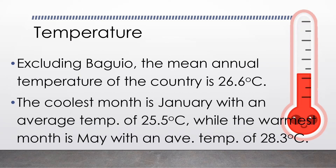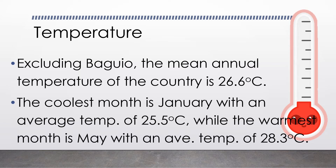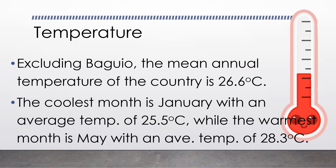There are several weather elements that have great influence on the climate of the Philippines. The first one is temperature. Temperature is a measure of the hotness or coldness of the air or the atmosphere. In the Philippines, excluding Baguio, the mean annual temperature of the country is 26.6 degrees Celsius.